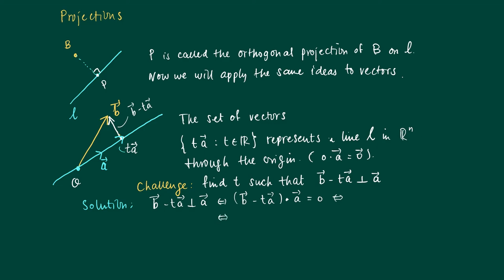Now work out the expression that we have here, so we get B dot product A minus T A dot product A equals 0. And now we can of course solve for T in this equation, T equals B dot product A divided by A dot product A.